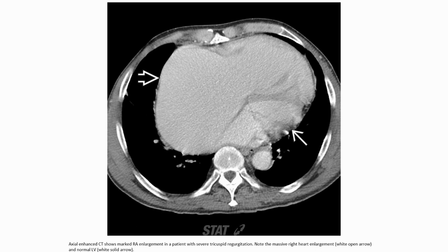Axial CT demonstrates right atrial enlargement in a patient with severe tricuspid regurgitation. Note the massive right atrial enlargement indicated by the wide open arrow, and the enlarged right ventricle indicated by the wide solid arrow.